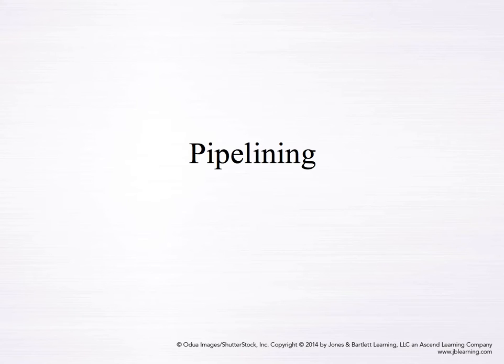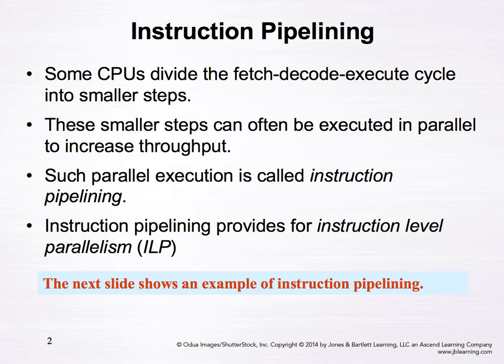In this video we talk about instruction pipelining. Some CPUs divide the fetch-decode-execute cycle into smaller steps. These smaller steps can often be executed in parallel to increase throughput. Such parallel execution is called instruction pipelining. Instruction pipelining provides for instruction level parallelism, or ILP.